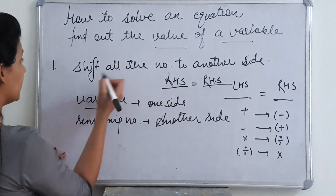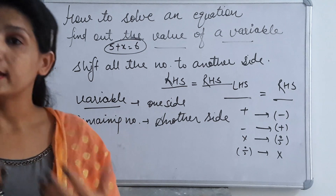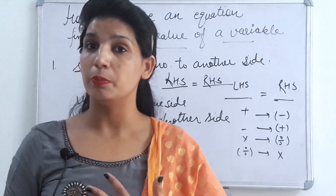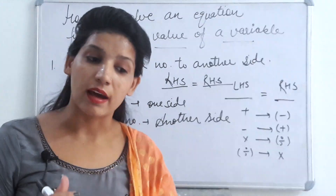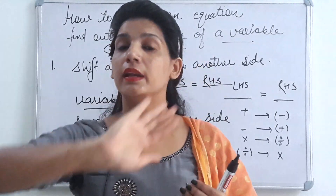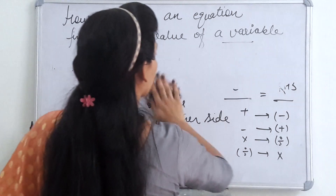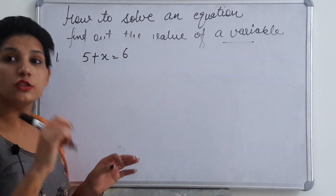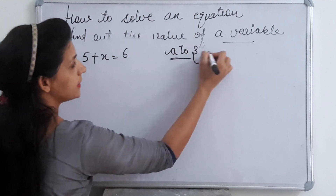For example, take the simple equation: 5 plus x is equal to 6. Our first task is to keep the variable on one side. From a to z, all alphabets are our variables, so here x is our variable. We need to shift 5 to the other side.